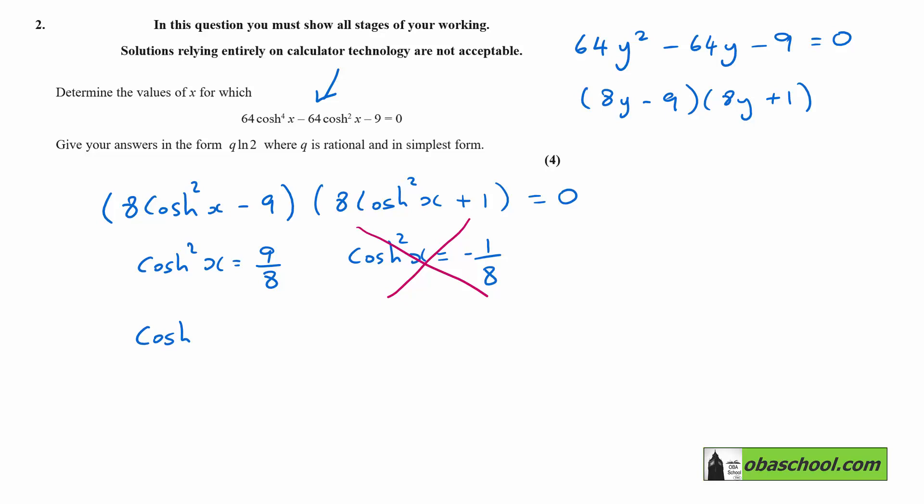Now this would give us cosh x is plus or minus 3 over the square root of 8 which is 2 root 2 and so we could write that as plus or minus 3 root 2 on 4 but remember that the cosh itself cannot be negative.